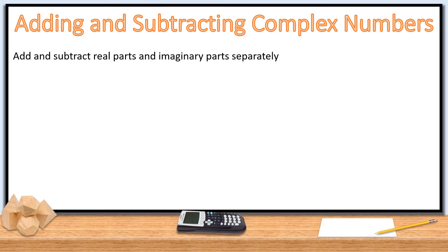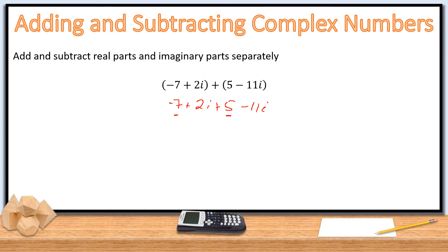When it comes to operations on complex numbers, it's pretty straightforward — kind of like adding variables in algebra. If you think of i as a variable, it gets easier. So if we're asked to add, we add or subtract the imaginary and real parts separately. For minus 7 plus 2i plus 5 minus 11i, we drop the parentheses: minus 7 plus 5 is minus 2, and 2i minus 11i is minus 9i. Real part followed by imaginary part is the standard way of writing it, but having the i first is not incorrect.